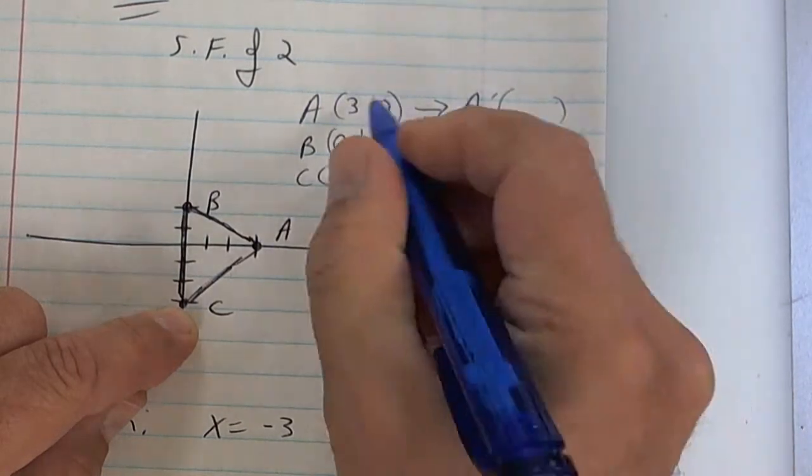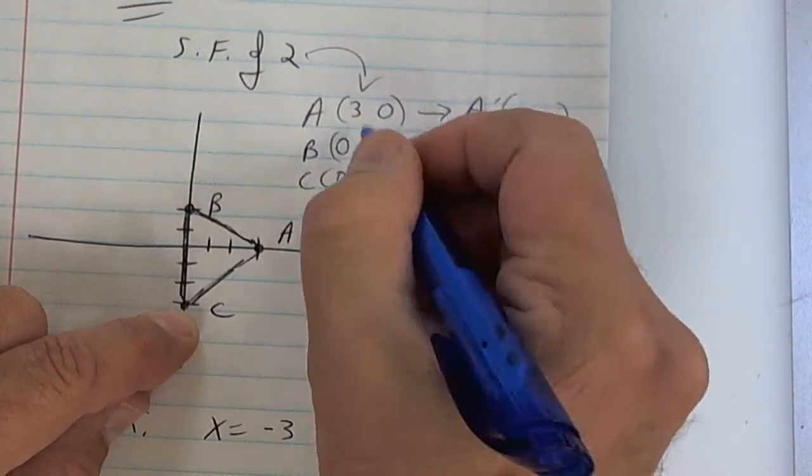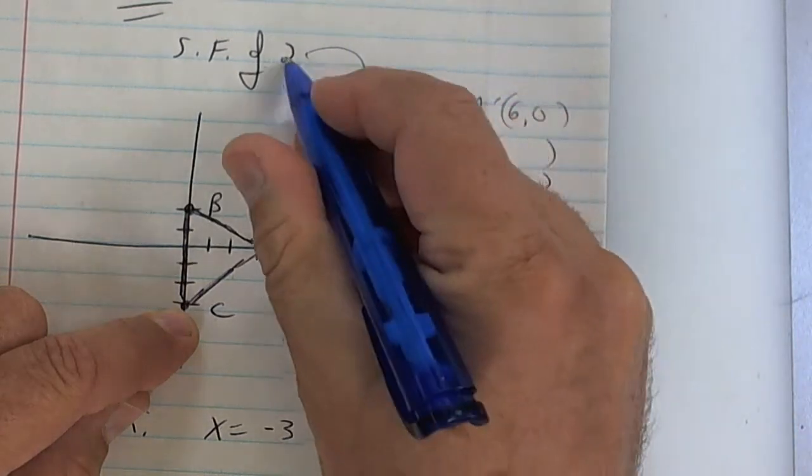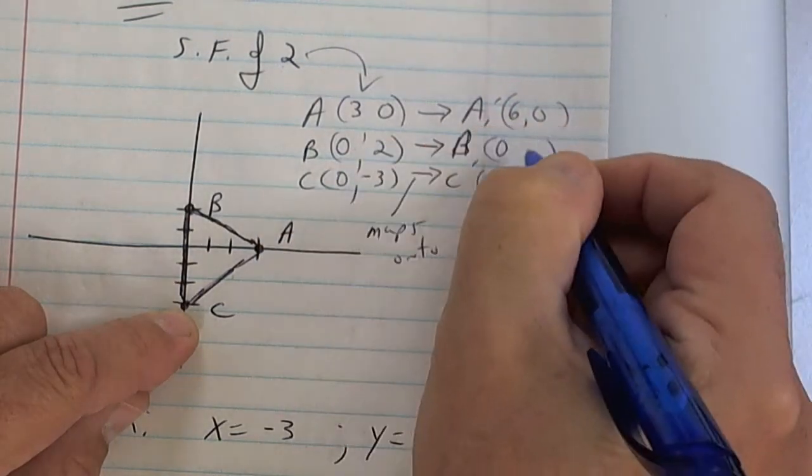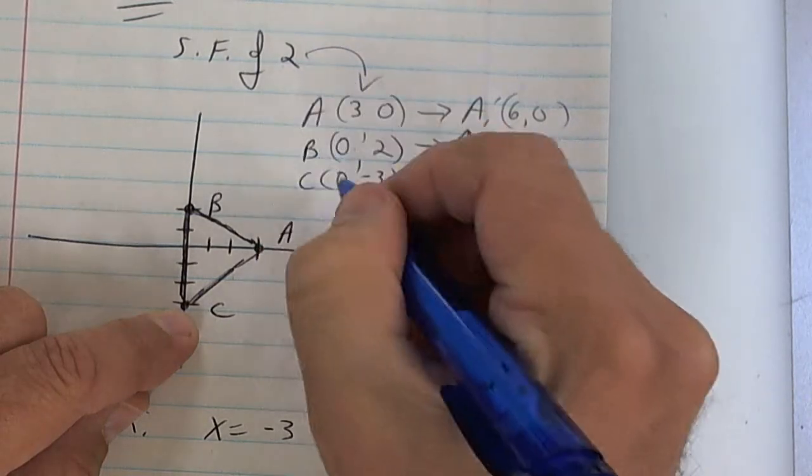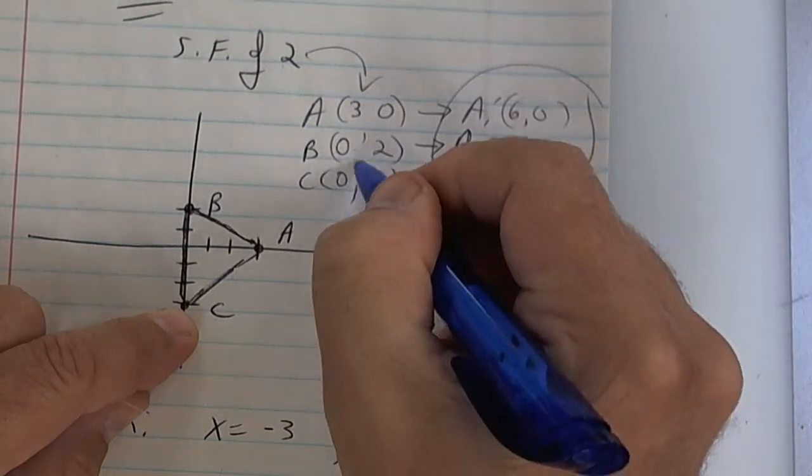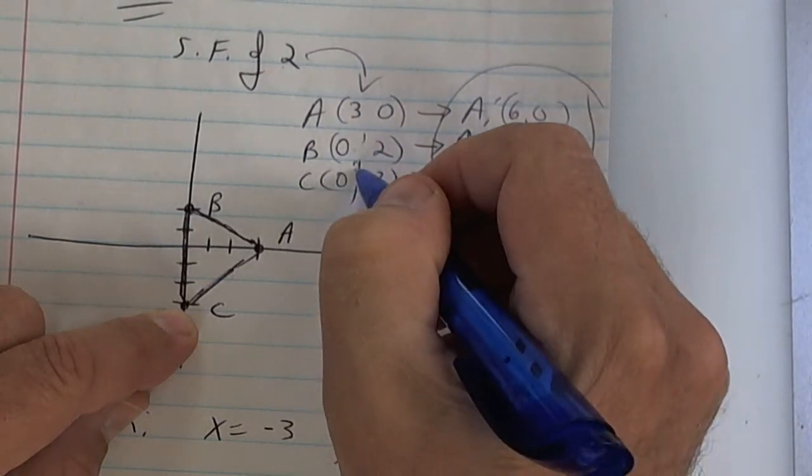So the image, you're going to multiply the x and the y by two, all of these. Two times three is six, two times zero is zero, two times zero is zero, two times two is four, two times zero is zero, two times negative three is negative six. This is the image, this is the pre-image, the start one.